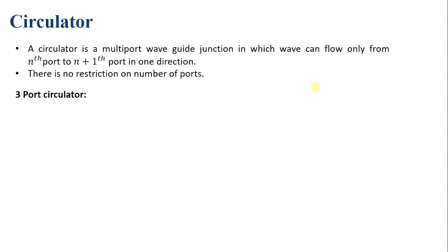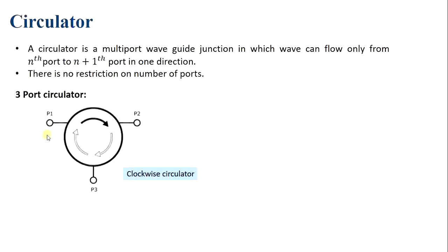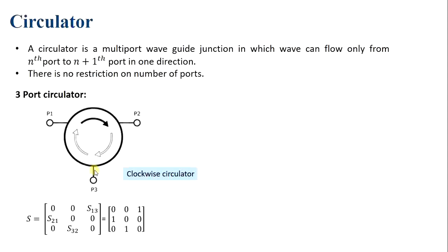For the three-port clockwise circulator: port 1, port 2, and port 3 — if input is applied at port 1, we get output only at port 2; if input is at port 2, output is at port 3; if input is at port 3, output is at port 1. For the S-matrix, when input is at port 1 and output at port 2, S21 = 1; input at port 2 and output at port 3, S32 = 1; input at port 3 and output at port 1, S13 = 1.